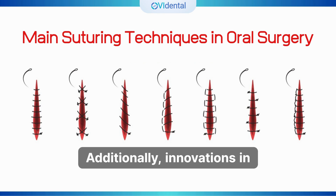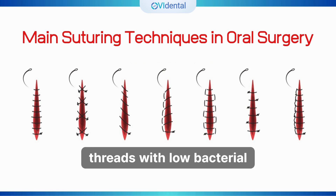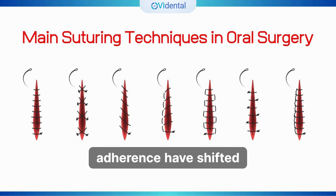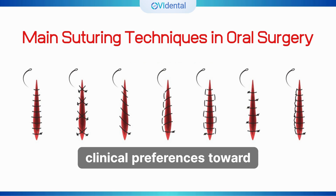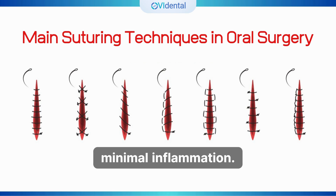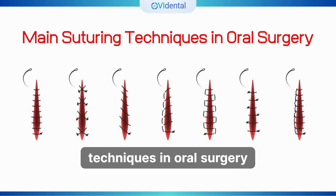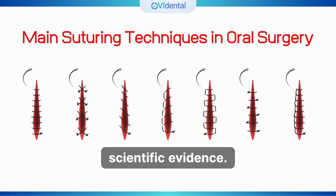Additionally, innovations in suture materials — such as monofilament synthetic threads with low bacterial adherence — have shifted clinical preferences toward methods that ensure tissue integrity with minimal inflammation. Let's explore the most widely used suturing techniques in oral surgery today, grounded in recent scientific evidence.